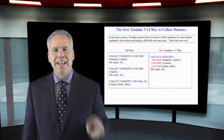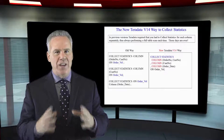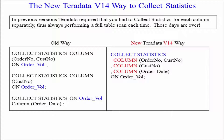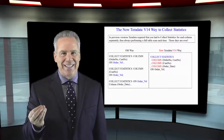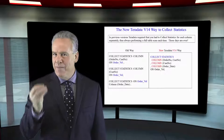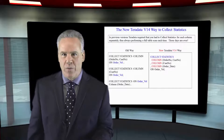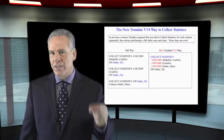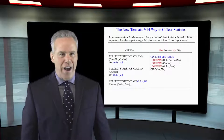Teradata V14 collects statistics in a much better fashion. Pre-Teradata V14, you had to collect statistics individually. If you wanted to collect three different things on a table statistics-wise, you'd do it the first time collecting one, then again collecting the second, then a third time for the third column or index — and it did full table scans each time, which never made sense. With V14, I can collect all of the statistics at one time in one pass. This is a huge advantage and even more reason for you to collect statistics on volatile tables.